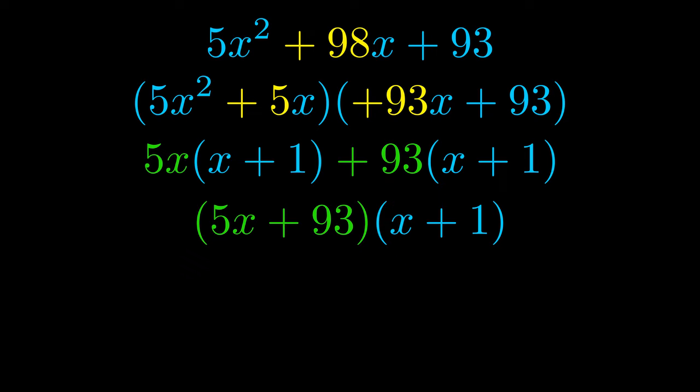Those blue values will become one of our factors and we will combine the two green values, the GCFs that we pulled out, to get the other one. And that is our fully factored equation.